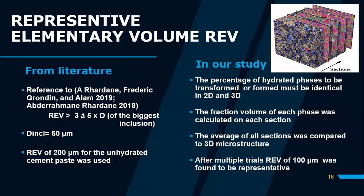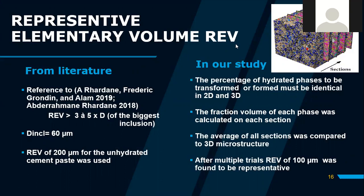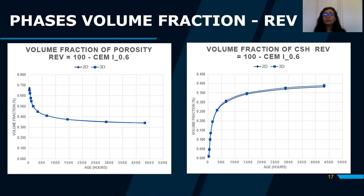To perform the calculations, we must define a representative elementary volume (REV). From the literature, Rardain 2019 states the REV should be more than three to five times the diameter of the largest inclusion, which is 60 micrometers, giving an REV of 200 micrometers for unhydrated cement. However, we compared the volume fraction in 2D and 3D sections: the percentage of hydrated phases to be transformed must be identical between 2D and 3D. After multiple trials, we found that an REV of 100 micrometers is representative, as the curves for porosity and C-S-H volume fraction converge between 2D and 3D.